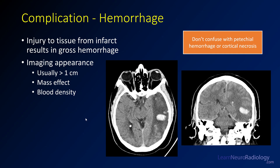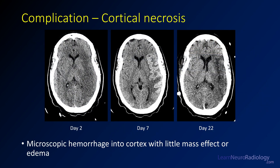Cortical necrosis is a more delayed phenomenon — that's microscopic hemorrhage into the cortex with little or no mass effect or edema. Here we have a case of a left MCA infarct on day two after presentation, with a hypodense region in the left MCA territory. By day seven, we see cortical gyroform hyperattenuation has developed following the cortex, but with very little mass effect. This is what cortical necrosis looks like — some call it cortical laminar necrosis, though that's more of a pathologic determination. By three weeks, that cortical necrosis has washed out, leaving a volume-negative area of encephalomalacia in the left MCA territory. Most of the time, these patients do not have to stop anticoagulation.